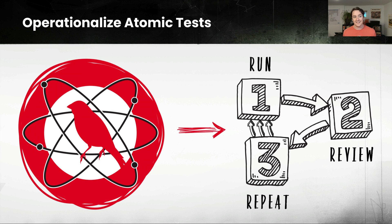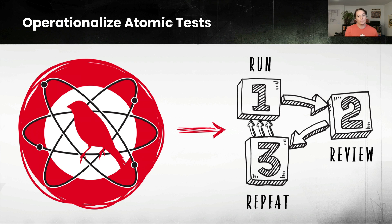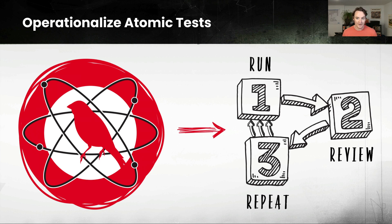The last thing is just making a habit out of this. Maybe you're using it to validate detective controls — every once in a while, you're going to want to run a battery of atomic tests, review the output, and then repeat it. But that's not the only use case. One of my personal favorite use cases is education. I learned a ton simply from installing Sysmon on a machine, running atomics, going and finding the telemetry associated with those atomics, and repeating that process until I really got a good idea of what malicious and suspicious behavior looks like on an endpoint.